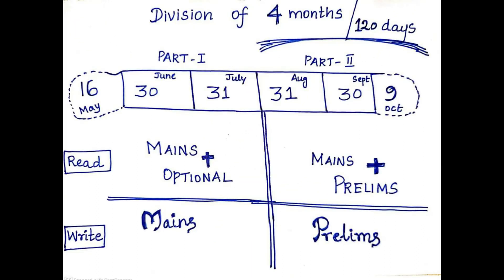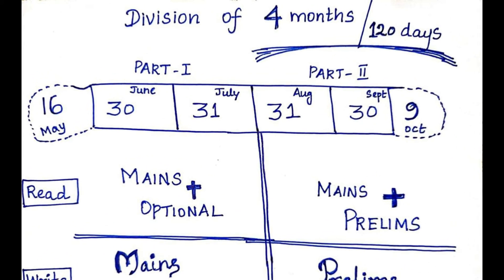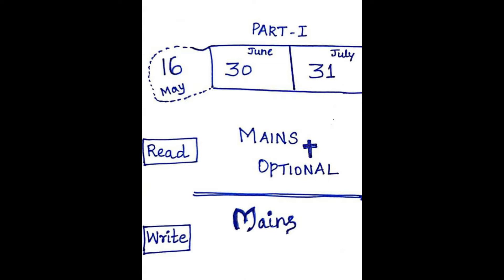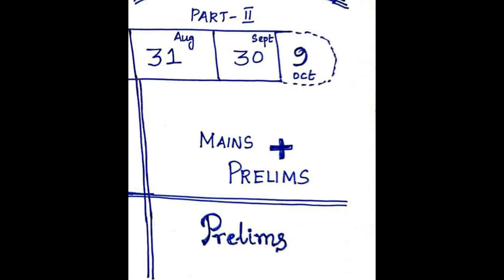Next, we will divide these 4 months which is 120 days into 2 parts. The first 2 months in part 1 and the rest in part 2. For the first 60 days, that is for part 1, for the months of June and July, I would entirely focus upon mains and optional. Whereas in the later half, which is part 2, in the months of August and September, my focus would change to prelims and I would practice more and more prelims mocks.